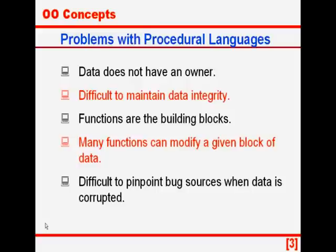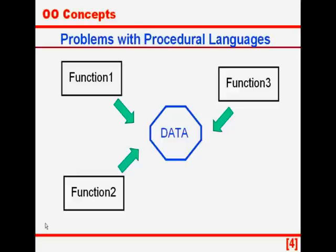The main building blocks of a procedural language are functions. Whether it is a Fortran program or a C program, functions are the building blocks. Many functions can modify a given block of data. So when the data gets corrupted or something goes wrong, it becomes very difficult to pinpoint which function has misbehaved to create the bug. Here is a picture: function 1, function 3 and function 2 are all using shared data.